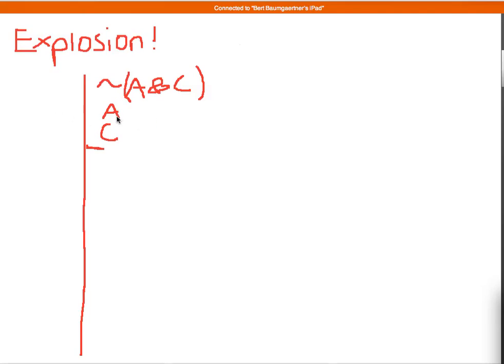Conjunction introduction is going to allow me to build a new sentence, a and c. And that sentence is actually going to contradict this sentence over here, which means the premises that I'm starting out with are actually contradictory. And hopefully you see that, and you're exactly right to think that.